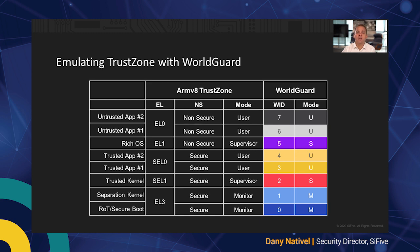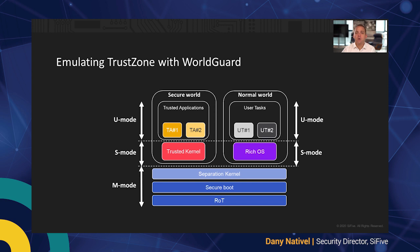Exception level 3, or EL3, which works in monitor mode on ARM, runs in RISC-V machine mode. The trusted kernel or rich OS runs in RISC-V supervisor mode, where both secure and non-secure applications run in RISC-V user mode. As you can see, we can still maintain the artificial notion of secure and normal worlds found in TrustZone, and could even expand it with more containers that would provide intermediate trust levels such as most secure, less secure, and so on.